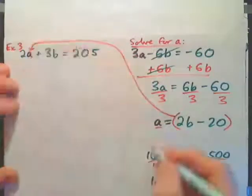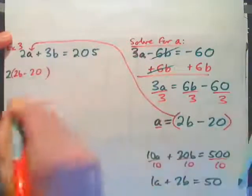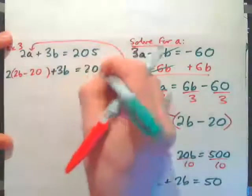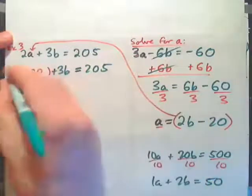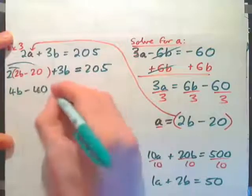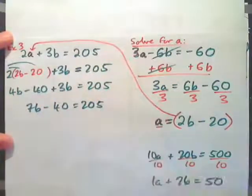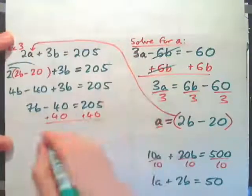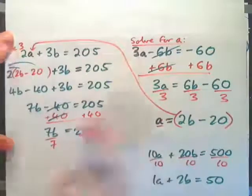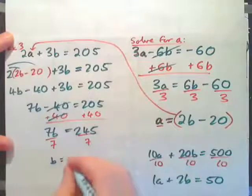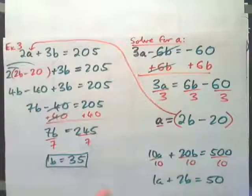We put parentheses around 2b minus 20 and plug it in for a. The equation becomes 2 times (2b minus 20) plus 3b equals 205. Multiplying out gives 4b minus 40 plus 3b equals 205. Adding like terms: 7b minus 40 equals 205. Add 40 to both sides: 7b equals 245. Divide by 7: b equals 35 cents.